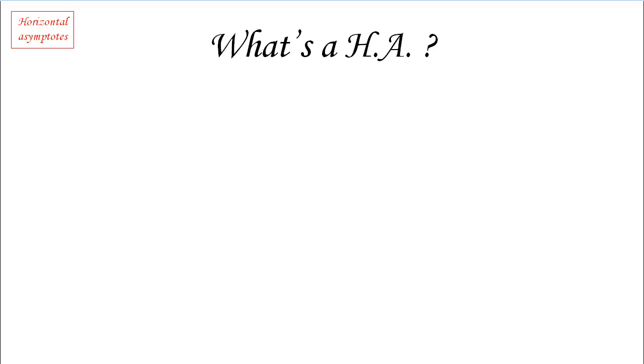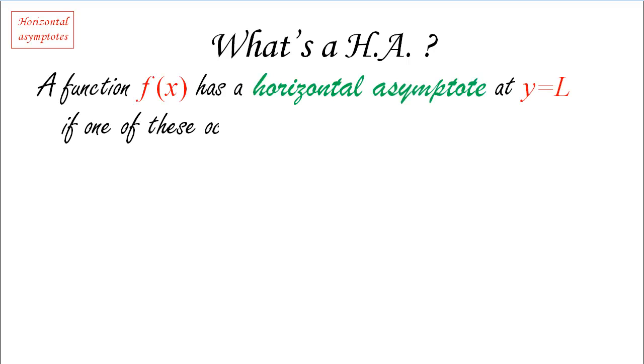So an accurate definition of a horizontal asymptote goes along the same lines as that of a vertical asymptote. Namely, we're going to say that a function f(x) has a horizontal asymptote at y equals L if one of these two situations occurs. Either the limit as x goes to negative infinity of our function is some number L, meaning that this limit exists and it is an actual number.